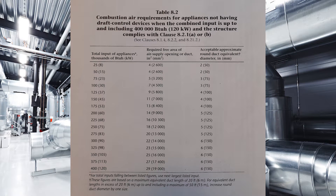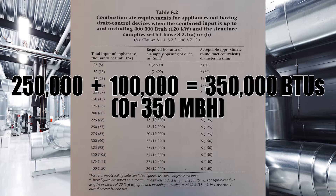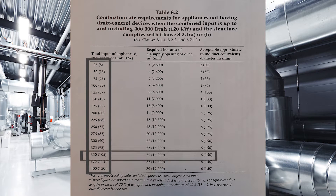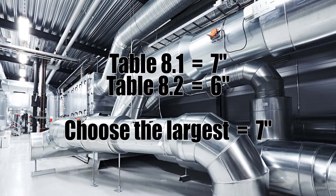Now we look at table 8-2 with a combined total of everything. I've got a 250,000 BTU boiler and a 100,000 BTU furnace — put those together and I've got 350,000 BTUs. I go down to 350,000 BTUs on the left-hand column, come across to the right, and I need a 6-inch round air supply. Now I need to choose the larger one. Table 8-1 said 7 inches, so 7 inches will be my air supply size.